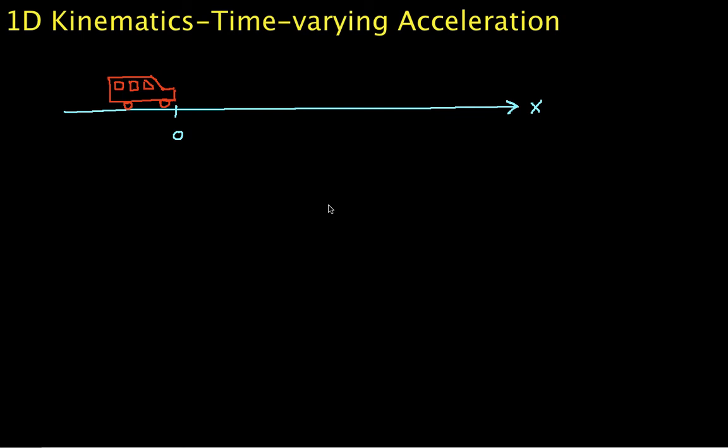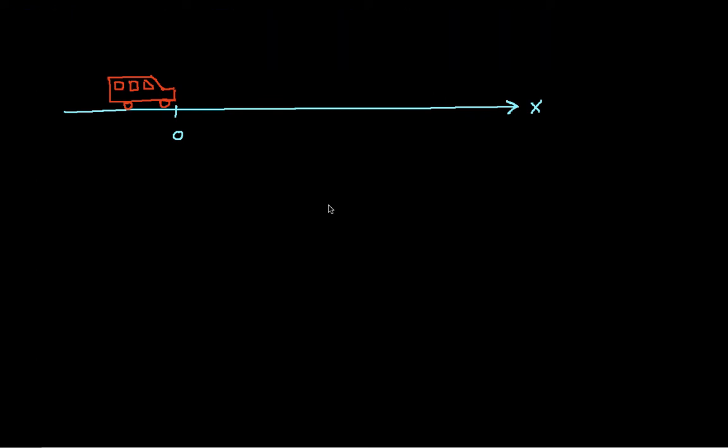Hello and welcome to this video on one-dimensional kinematics. In particular, we will look at the position of a particle that is undergoing time-varying acceleration. Because this is kinematics, we won't be concerned with where the time-varying acceleration comes from or what causes it. Our concern is only, given that we have a particular time-varying acceleration, what's the velocity and the position.